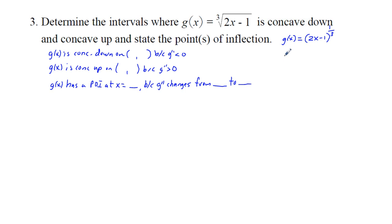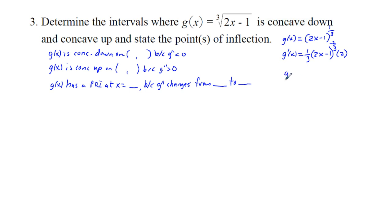Finding the first derivative using the power rule and chain rule: g prime of x = (1/3)(2x - 1)^(-2/3) · 2, which simplifies to g prime of x = (2/3)(2x - 1)^(-2/3).